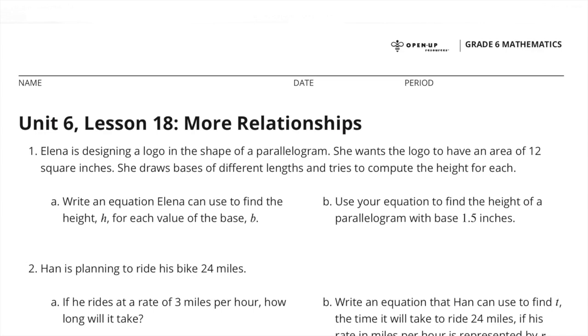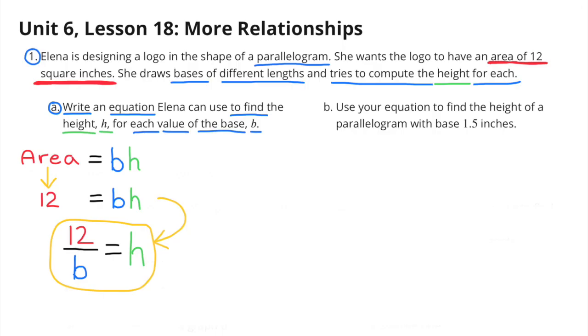Unit 6 Lesson 18 More Relationships Number 1. Elena is designing a logo in the shape of a parallelogram. She wants the logo to have an area of 12 square inches. She draws bases of different lengths and tries to compute the height for each. A. Write an equation Elena can use to find the height, H, for the value of the base, B.